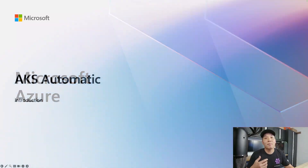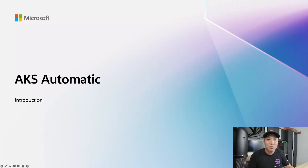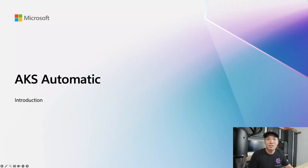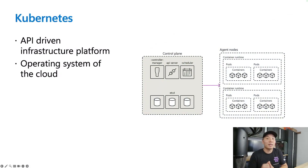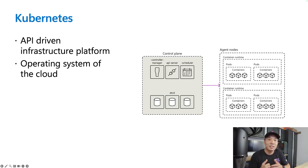What is AKS Automatic? We can't talk about AKS Automatic without first talking about what Kubernetes is and what Azure Kubernetes Service is — this is an evolution of AKS after all. Kubernetes is an open source platform that enables you to deploy and manage containerized workloads and services at scale. It offers a highly extensible platform backed by a robust set of APIs for management operations. It has become the de facto container orchestration engine and runs many of your favorite applications today.